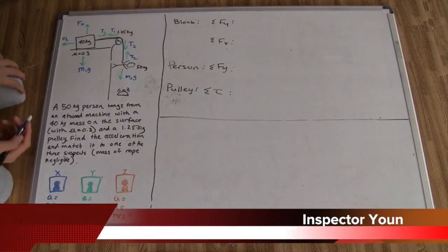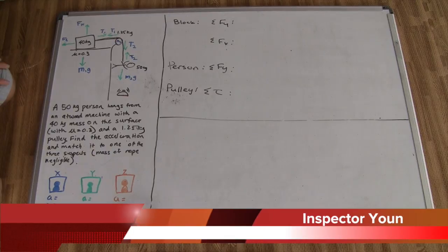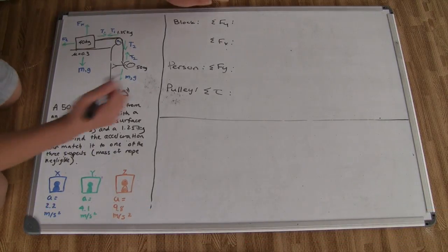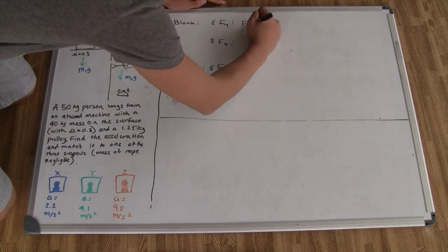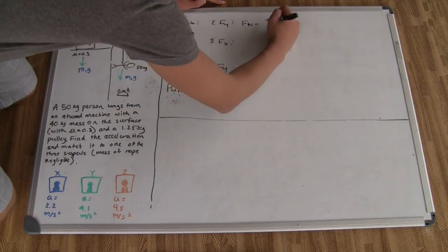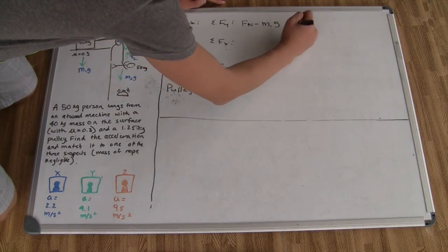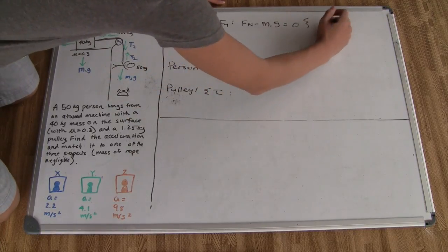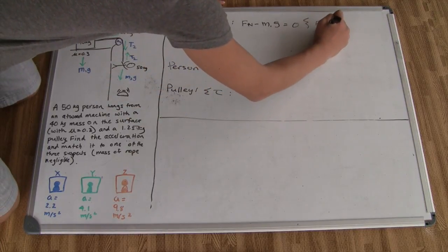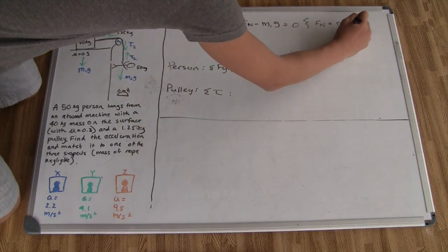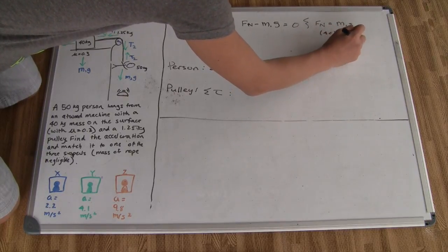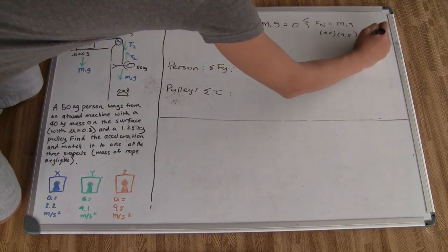To approach this problem, the first thing we consider is the summation of forces on the block in the y-direction. The normal force minus the weight (mass times gravity) of the block equals zero. Therefore, the normal force equals 40 times 9.8, which is 392 N.